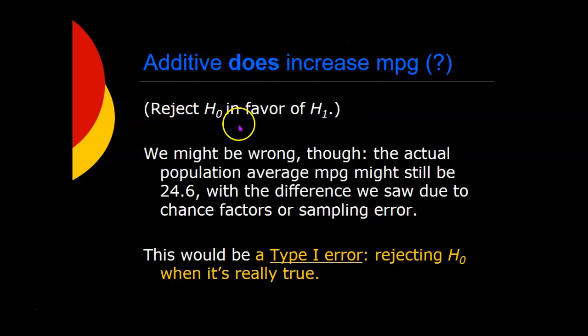It might be that the actual population average miles per gallon might still be 24.6. And the difference we saw was due to chance factors or sampling error, things other than any difference that the additive made. So that would be a type one error, rejecting the null hypothesis when it's really true.